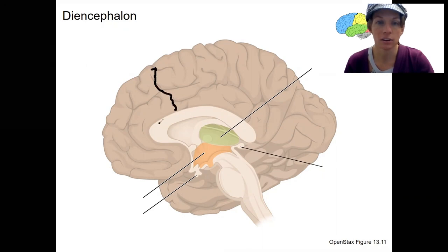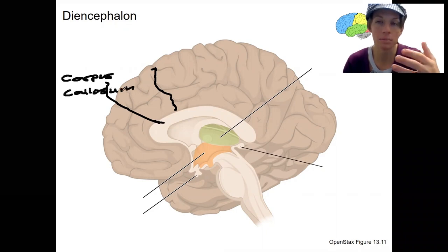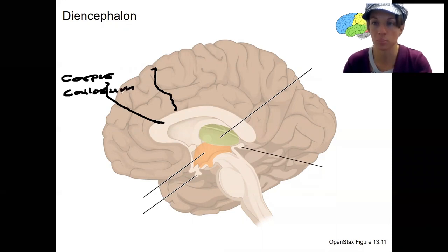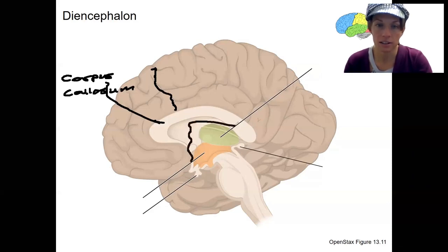This here, what is this white matter right here? This is our corpus callosum that attaches one hemisphere to the other, allows them to communicate. So deep to that, we've got the diencephalon.